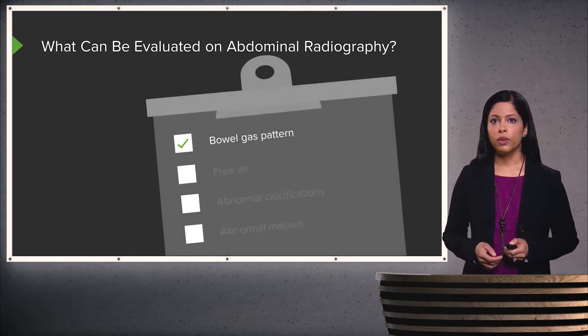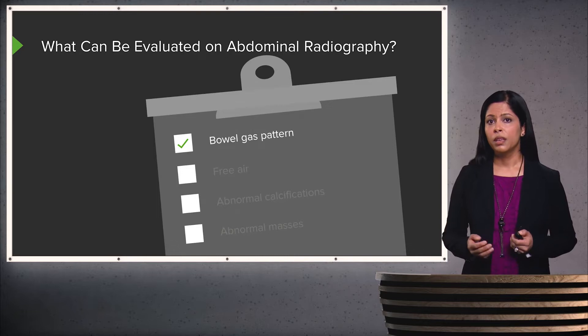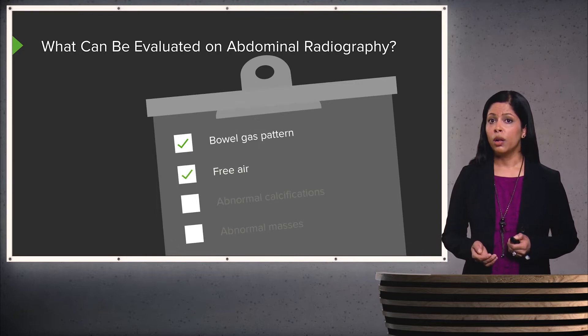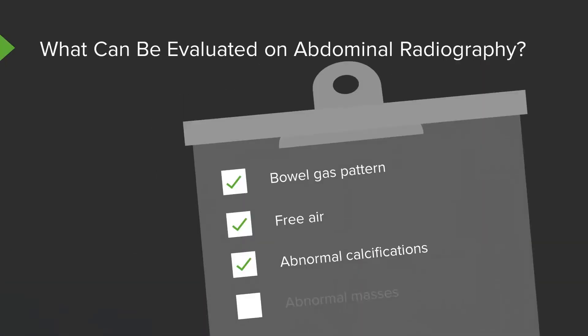So what can be evaluated on abdominal plain films? The bowel gas pattern is a very important thing. You can always evaluate for free air, which is something that you really don't want to miss. Abnormal calcifications can be seen on abdominal radiographs, as well as abnormal masses. These are the four major points to keep in mind when looking at an abdominal radiograph.